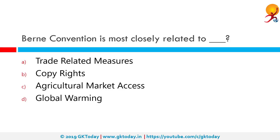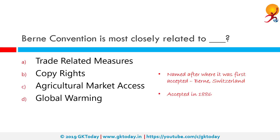The Berne Convention is most closely related to what? The Berne Convention for the Protection of Literary and Artistic Works, usually known as the Berne Convention, is an international agreement governing copyright which was first accepted in Bern, Switzerland in 1886. It deals with copyrights.